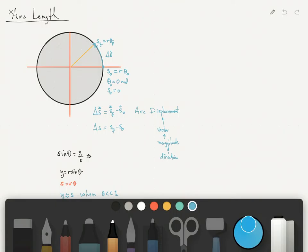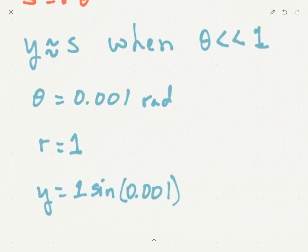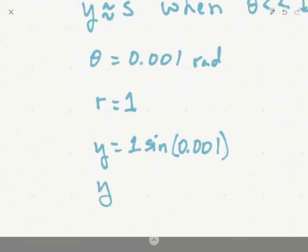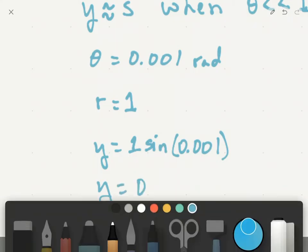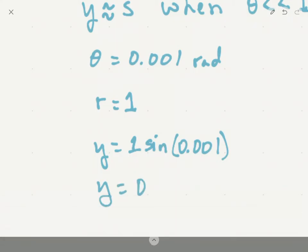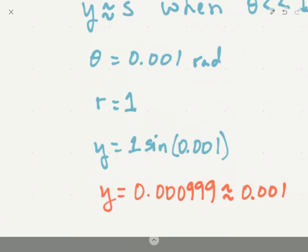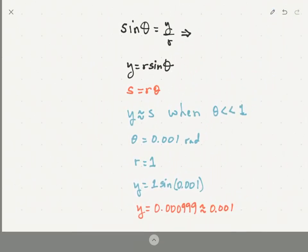I'm going to go ahead and pop that up, so that lets you know that Y is equal to 0.000999, which is approximately 0.001, okay?